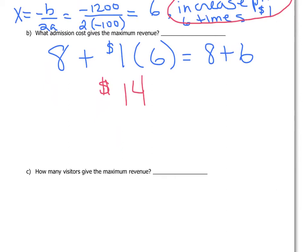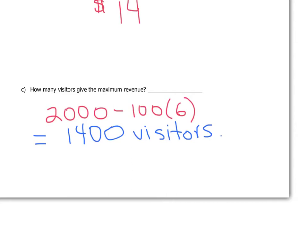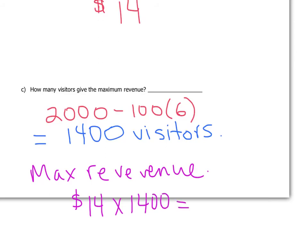How many visitors will pay fourteen dollars? We started with two thousand and every dollar increase costs us one hundred visitors. Six increases means six hundred fewer visitors, leaving fourteen hundred. Fourteen hundred people pay fourteen dollars, giving a maximum revenue of fourteen times fourteen hundred — nineteen thousand six hundred dollars.